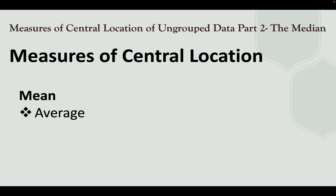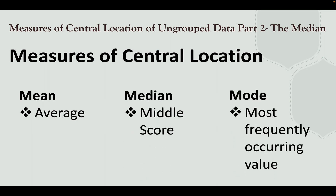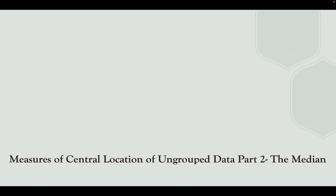Let us recall what are the three measures of central location: the mean, the average; the median, the middle score; and the most frequent data, which is the mode. So let's focus here on the median, or the middle score.